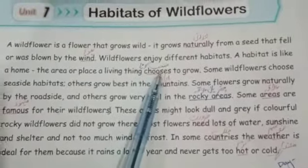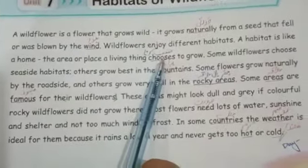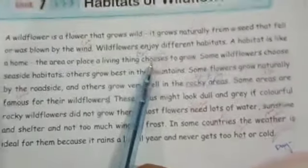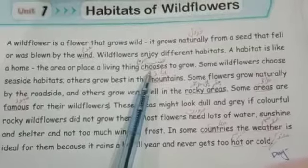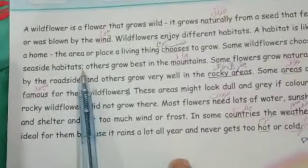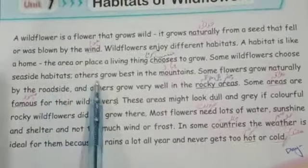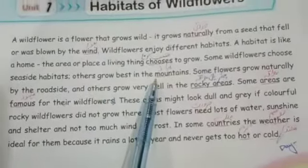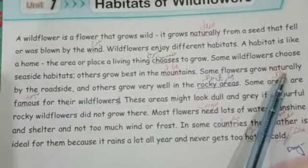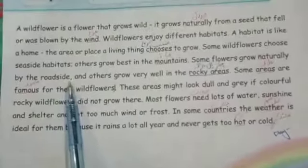یعنی یہ جو wildflowers ہیں وہ اپنے لئے الگ الگ رہائشگاہ چنتے ہیں۔ Habitat گھر بھی ہوتا ہے، اور وہ جگہ جہاں living things یعنی جاندار اشیاء رہتی ہیں۔ کچھ wildflowers سمندر کے کنارے (seaside habitat) چوز کرتے ہیں، کچھ پہاڑ پر (mountain) اگتے ہیں، اور کچھ flowers قدرتی طور پر سڑک کے کنارے (roadside) اگتے ہیں۔